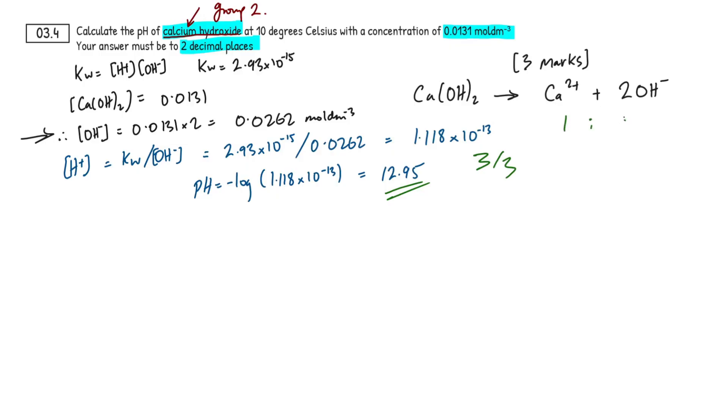The only real difficult thing here that a lot of students struggle with in the examiner's report is that it's dibasic. It's group two. Once it dissociates, you're going to have a one to two mole ratio. So, you have to multiply by two. Just keep that in mind.